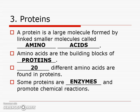This brings us to our third macromolecule: proteins. Previously we talked about carbohydrates and lipids, which both consist of carbon, hydrogen, and oxygen. Proteins consist of carbon, hydrogen, oxygen, and nitrogen. A protein is a large molecule formed by smaller molecules called amino acids — the building block of a protein is amino acids. There are only 20 amino acids in our world as we know it, and they come from different foods like beans, chicken, fish, or spinach.